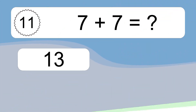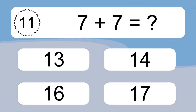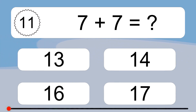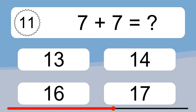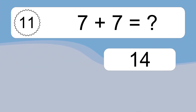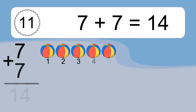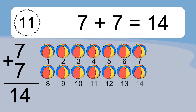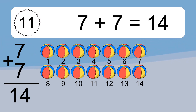7 plus 7 equals what? 7 plus 7 equals 14. Let's count it. 1, 2, 3, 4, 5, 6, 7, 8, 9, 10, 11, 12, 13, 14.